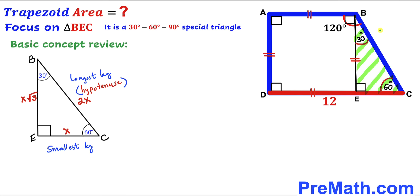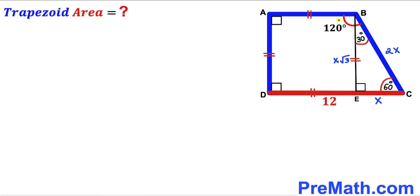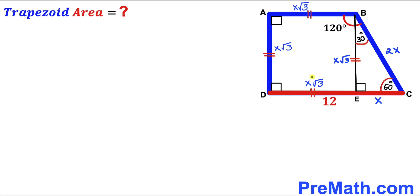Focusing on right triangle BEC, I'll label the smallest leg EC as x. Then the longest leg BC is 2x, and the third leg BE is x√3. Therefore, side BE has length x√3, and likewise side DE also has length x√3.